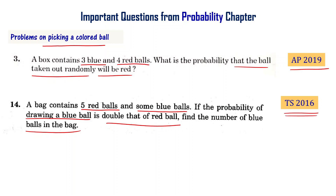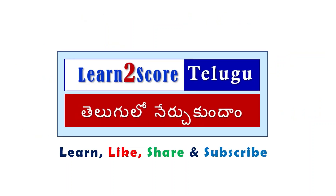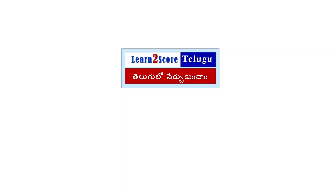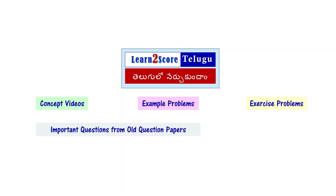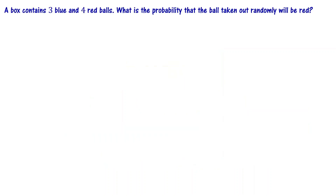Let us solve these two problems now. A box contains three blue colored and four red colored balls. What is the probability that the ball taken out randomly will be red? This is the question. According to the problem, we have three blue colored balls and four red colored balls.